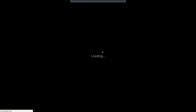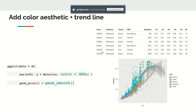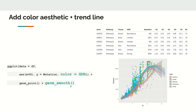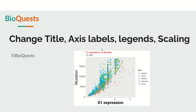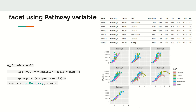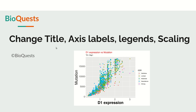So we have seen faceting with trend lines and with the pathway variable. Facet wrapping is a better way to convey your visualization more clearly compared to putting everything on a single plot.